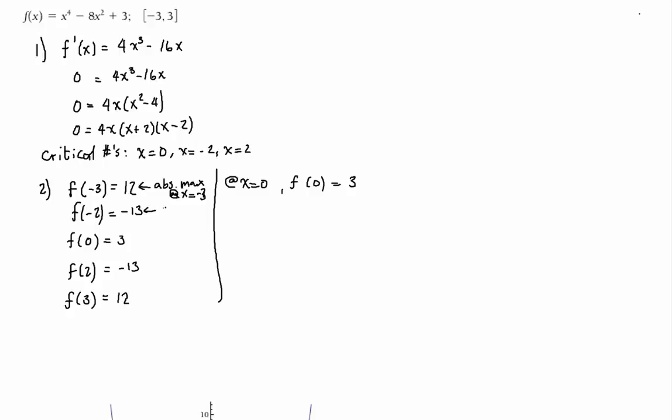There's an absolute min at x = -2, another absolute min at x = 2, and another absolute max at x = positive 3. So this is just because this function is actually very symmetric.